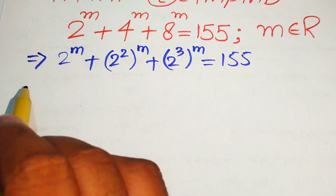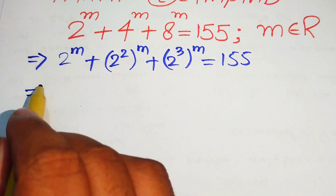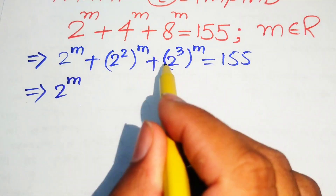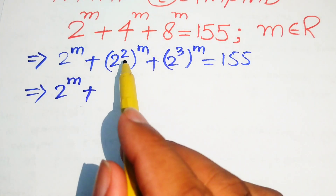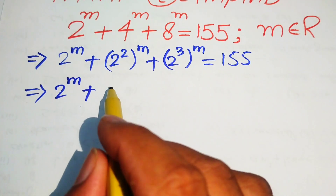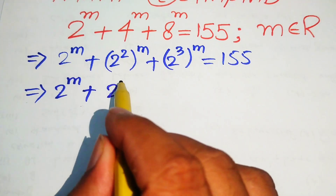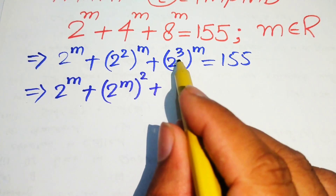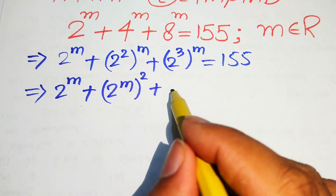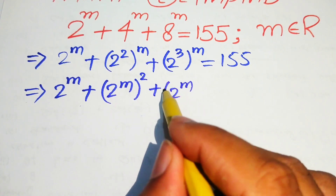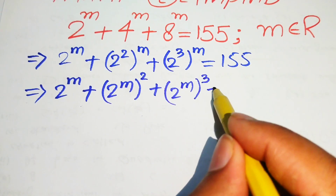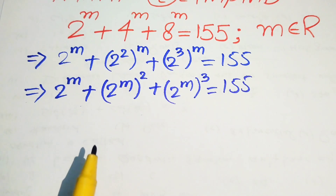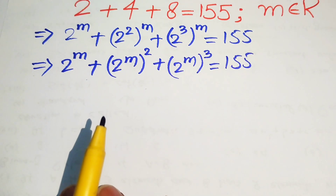In the next step, we use the exponential law and interchange the exponents. We write 2 to the power of m, whole squared, plus 2 to the power of m, whole cubed, equals 155. So the first term stays as 2 to the power of m, the second becomes (2^m)², and the third becomes (2^m)³.